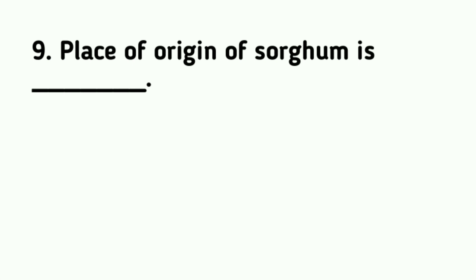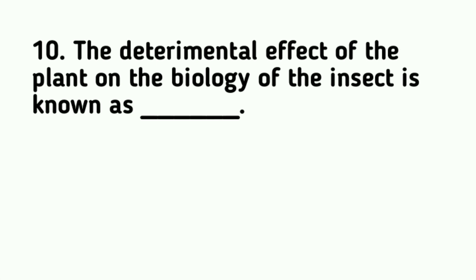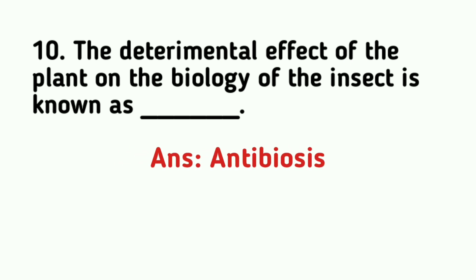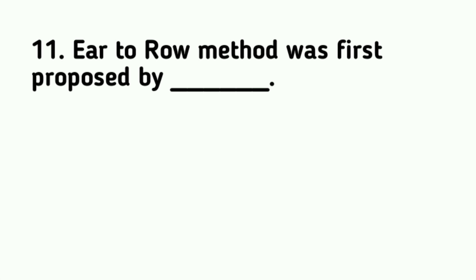Place of origin of sorghum is Africa. The detrimental effect of the plant on the biology of the insect is known as Antibiosis. The Aire to Roe method was first proposed by Hopkins.